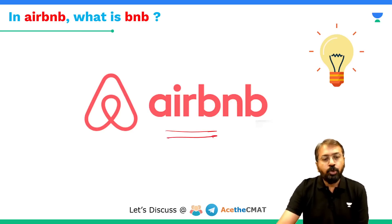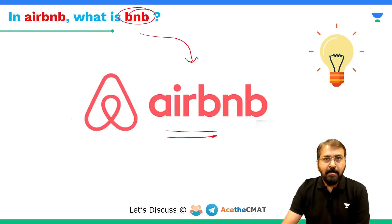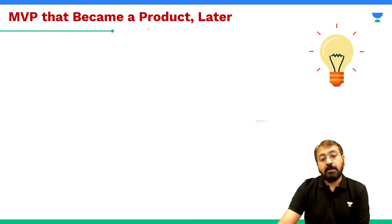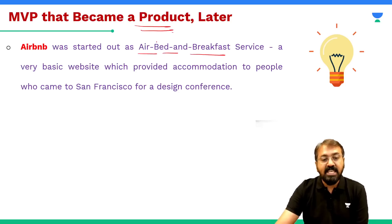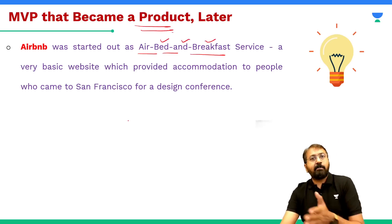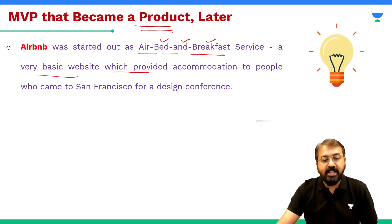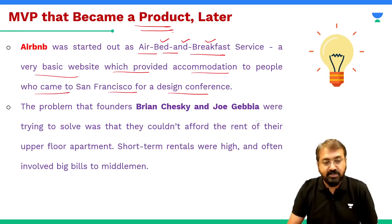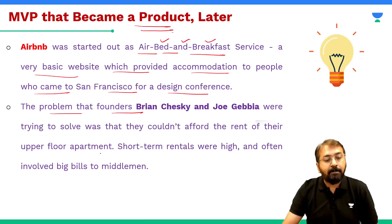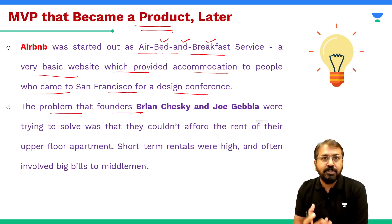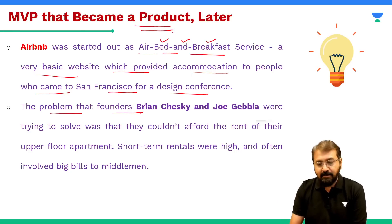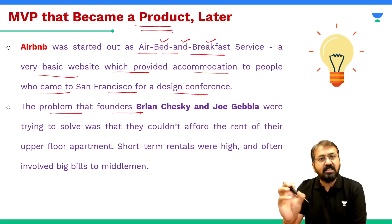A classic example of MVP is Airbnb. Do you know what BnB stands for in Airbnb? It stands for Bed and Breakfast. Airbnb was started as an air bed and breakfast company — a very basic website which provided accommodation to people who came to San Francisco for a design conference. The problem the founders Brian and Joe were trying to solve was that they couldn't afford the rent of their apartment, short-term rentals were high, and there were lots of middlemen involved.